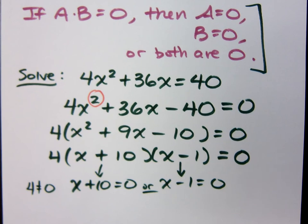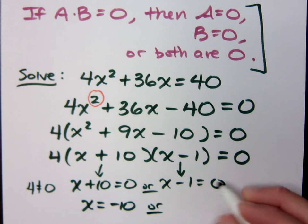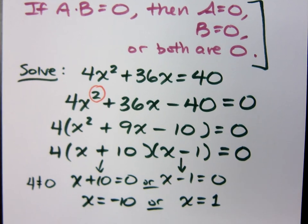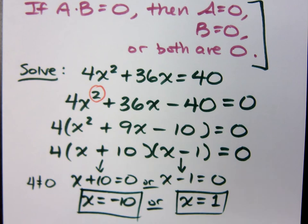Now if x plus 10 is equal to zero, that happens when x equals negative 10. Or here, x minus 1 equals zero happens when x equals positive 1. How many solutions do I have? I've got one, and I've got two.